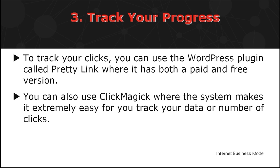The third and final rule is to track the progress of the list you have sold — specifically the number of clicks. This is important so you have an idea of how much you are able to deliver to your clients. You can use the WordPress plugin called Pretty Link, which has both paid and free versions — it lets you create short links using your domain name with all the tracking required, but make sure you possess a WordPress account beforehand. You can also use ClickMagic, which makes it extremely easy to track your data and number of clicks. ClickMagic will offer information such as your traffic score and which tier you obtained the traffic from.